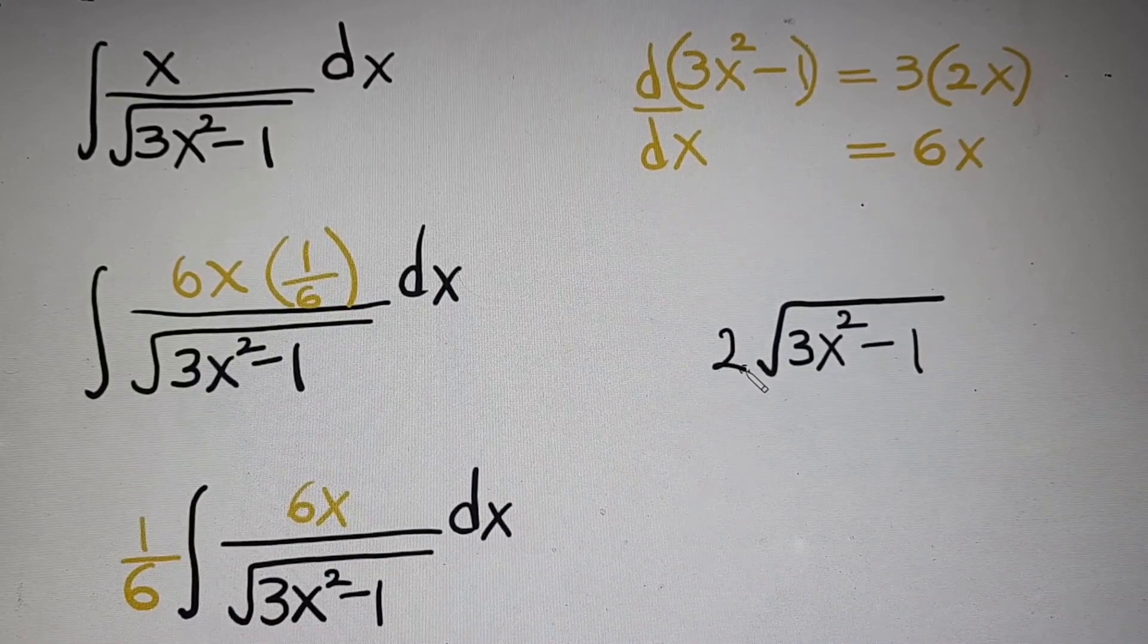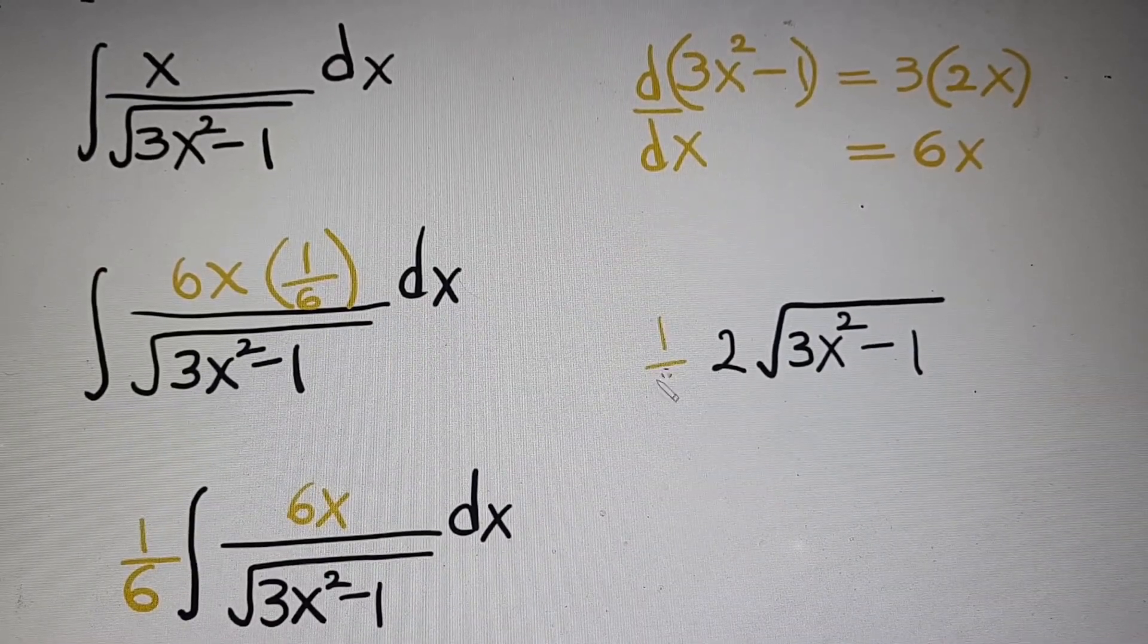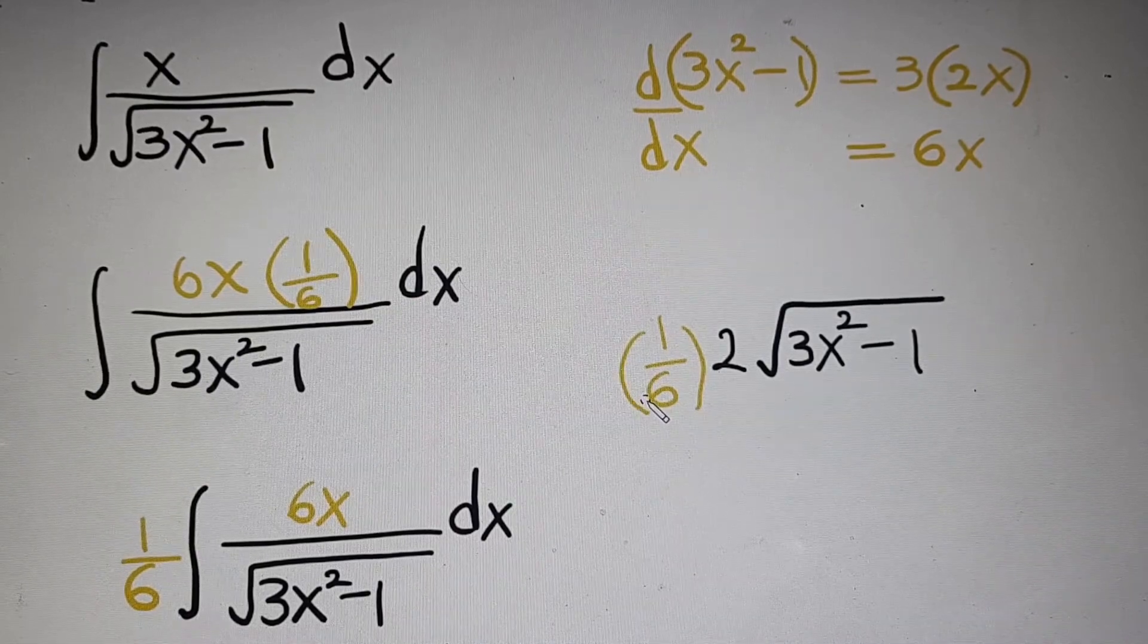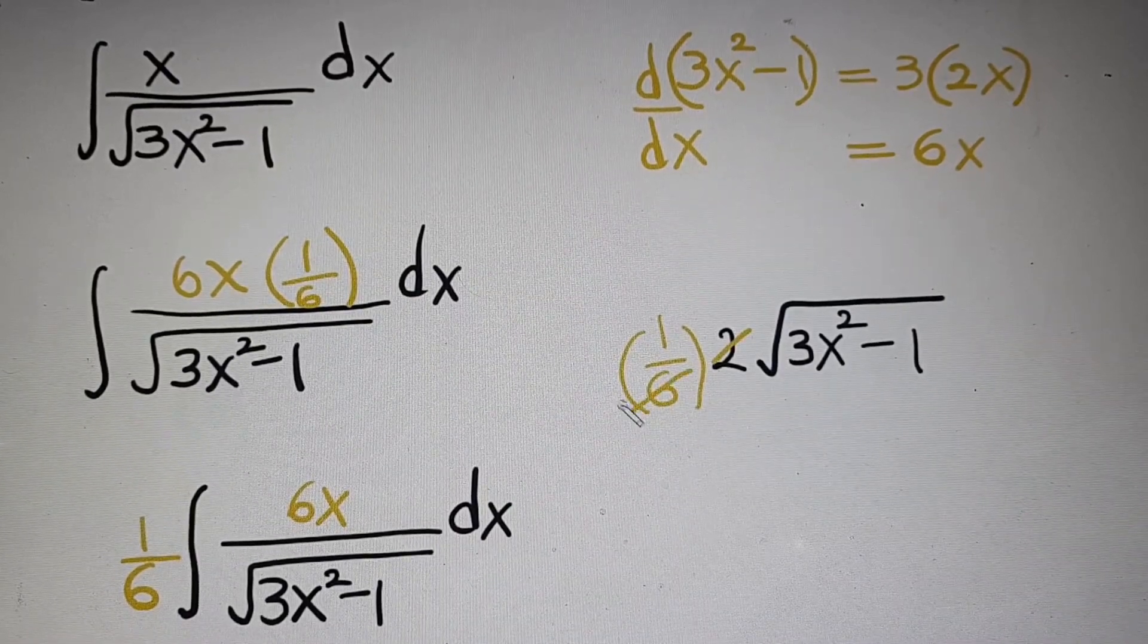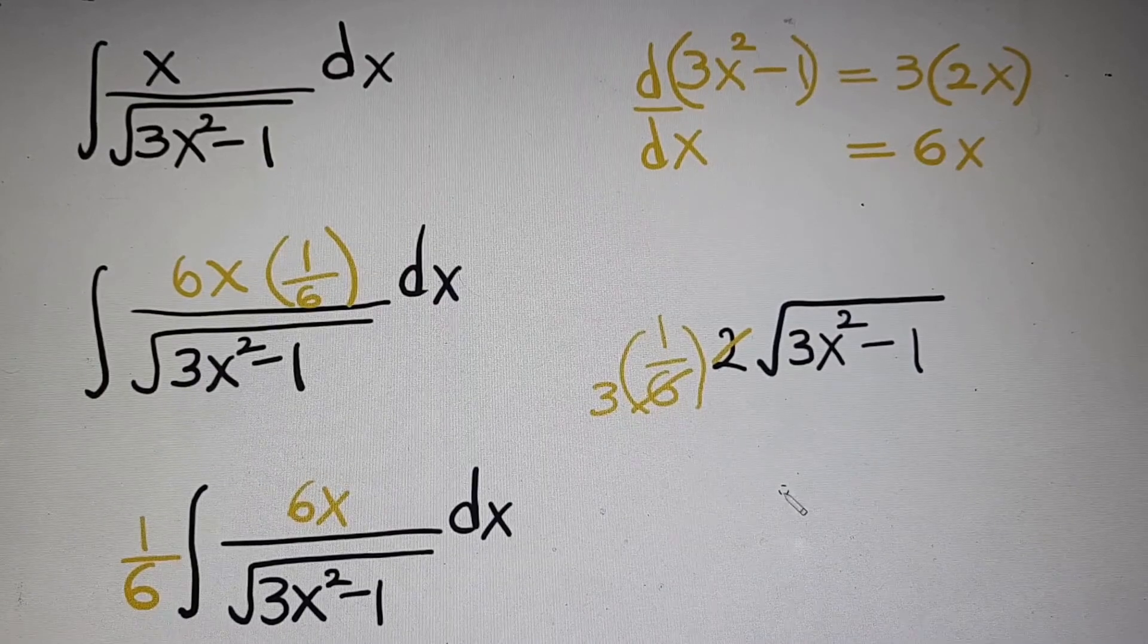And don't forget, we still have 1 over 6, and plus c, and now we have square root of 3x squared minus 1, divided by 3, plus c, and this is the answer.